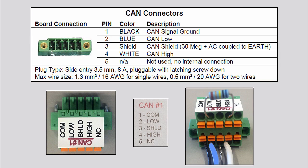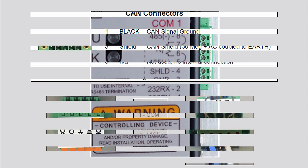Wiring of the CAN port should be as follows. Wire the black cable to pin 1 — this is the CAN signal ground. Wire the blue cable to pin 2 — this is the CAN low signal. Wire the shield to pin 3. Wire the white cable to pin 4 — this is the CAN high signal. Pin 5 is left empty. A 120 ohm resistor must be used as a termination resistor at the end of each trunk line. This resistor is wired with one end in pin 2 and the other in pin 4 of the connector.